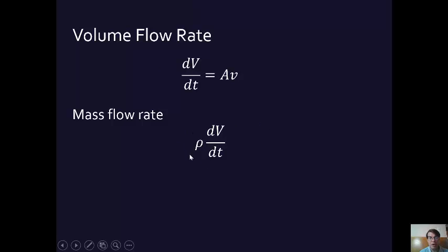Density is mass per volume, right? So you have volume on the bottom and a volume on the top, and so you're left with basically mass per time. So density times the volume flow rate gives you the mass flow rate.